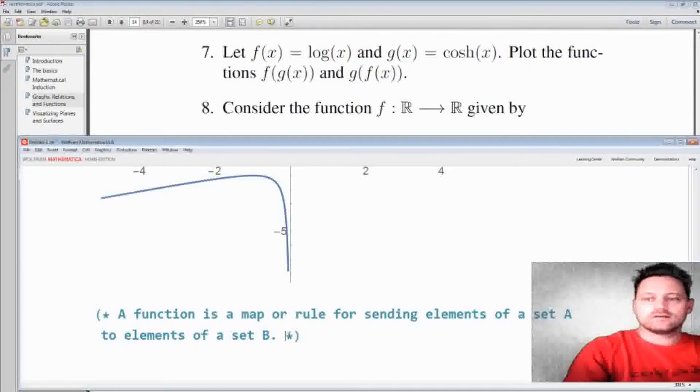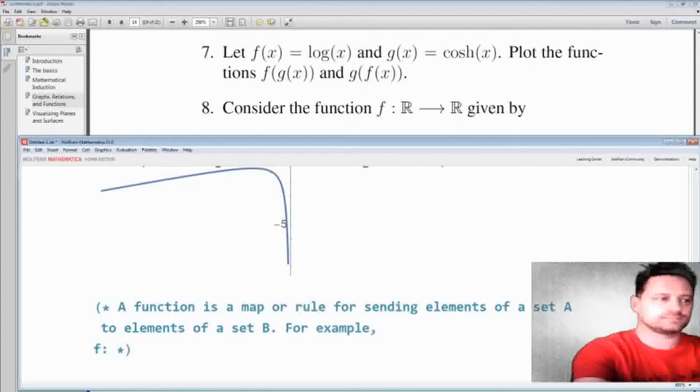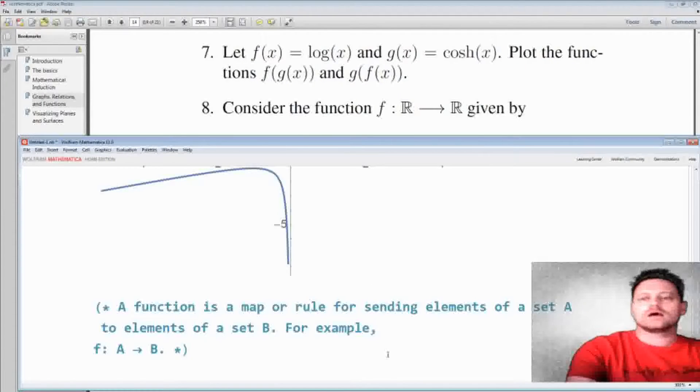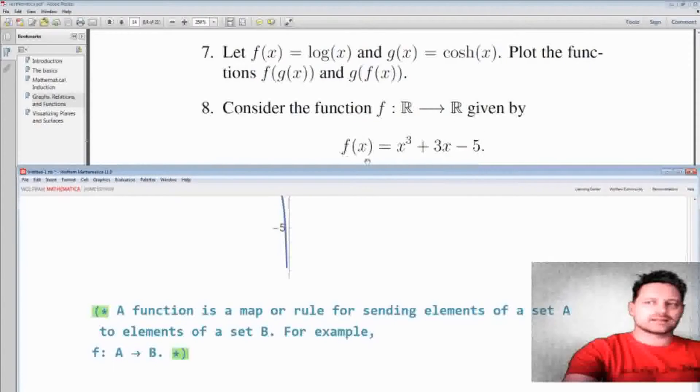It is often written exactly like what we see here. For example, f maps a to b, and then we would define exactly what the rule for that would be. Now we need this to be well defined and that means for every input x it has to be defined and go to exactly one element in b. So we're considering this function that maps real numbers to real numbers and its exact description is given by this. This is a cubic polynomial, fairly simple.